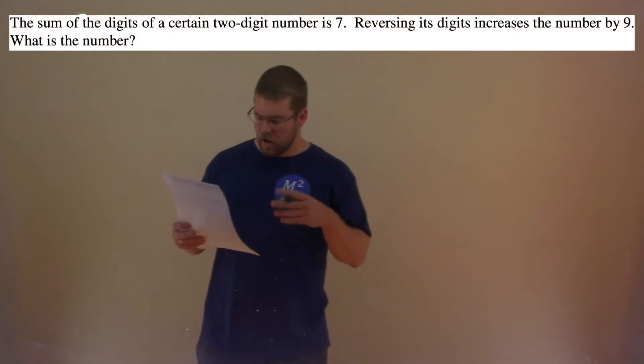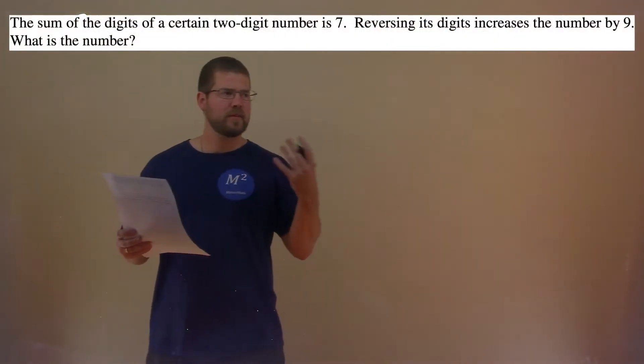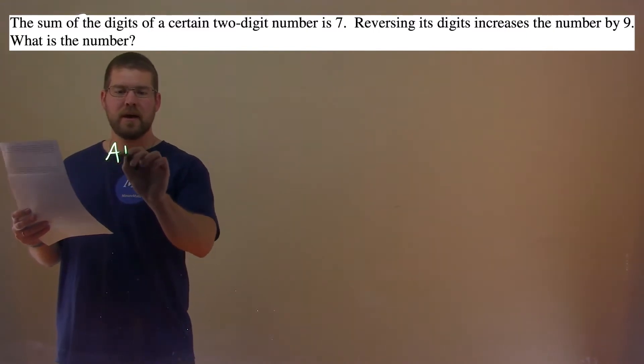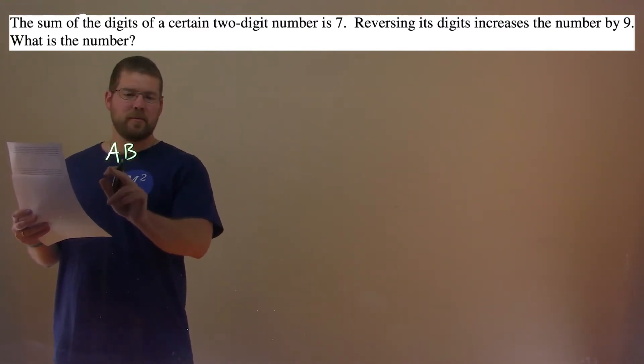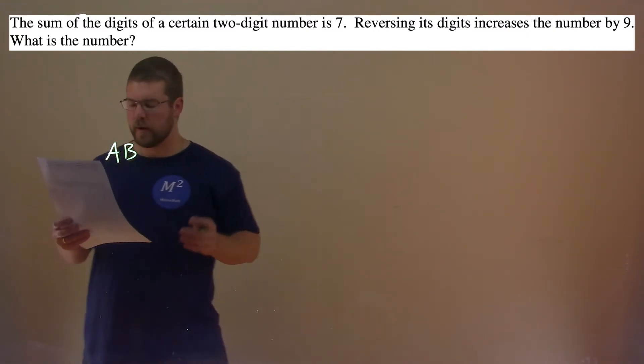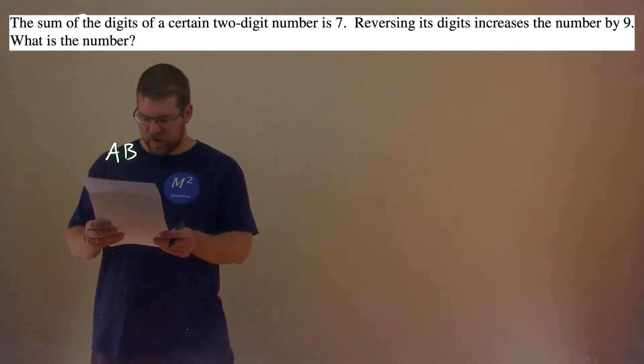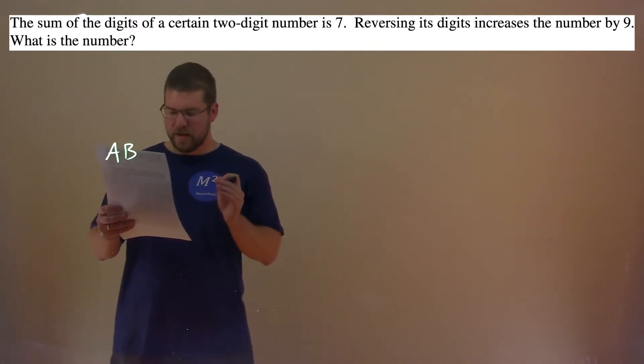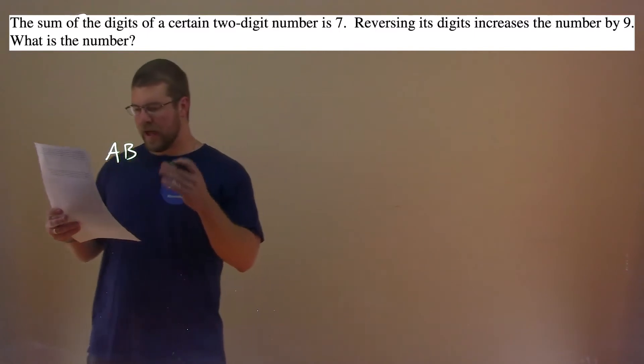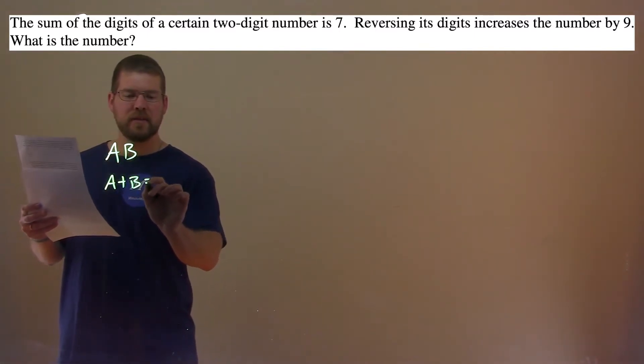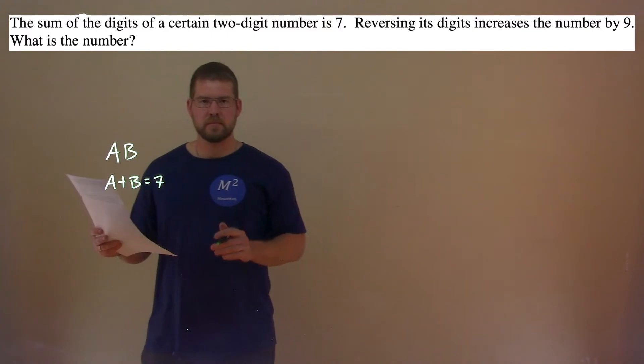So it's a two-digit number. Let's say this number is some two digits where it's A, B. So like 13 would be 1, 3 here. Well, they tell us that the sum of the digits, so A plus B, has to equal 7.